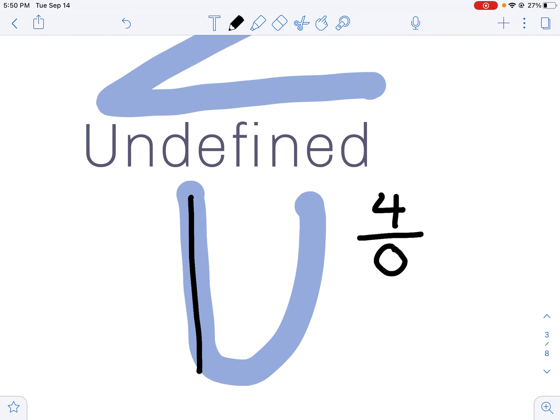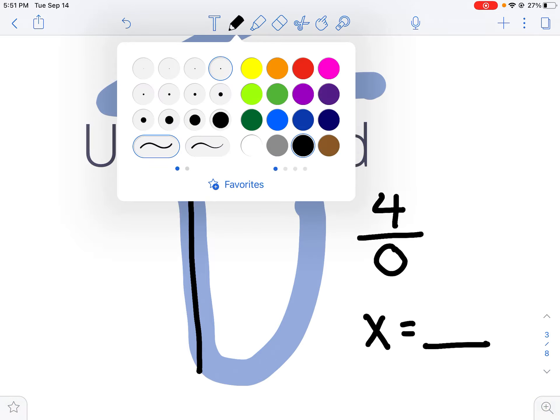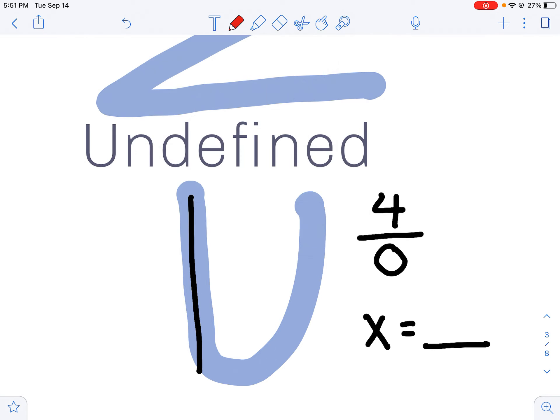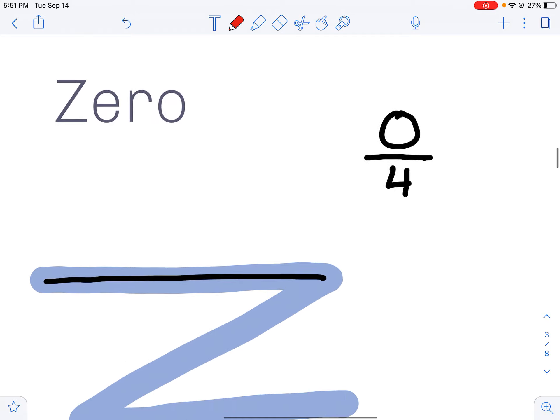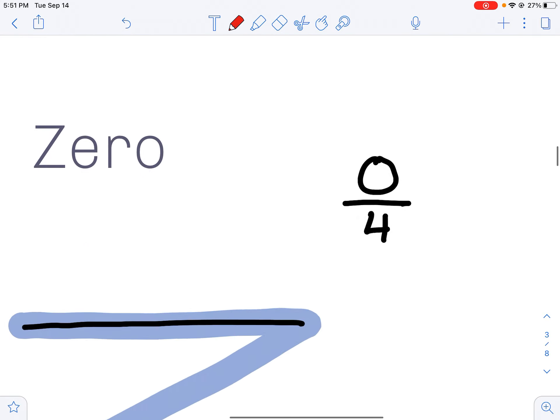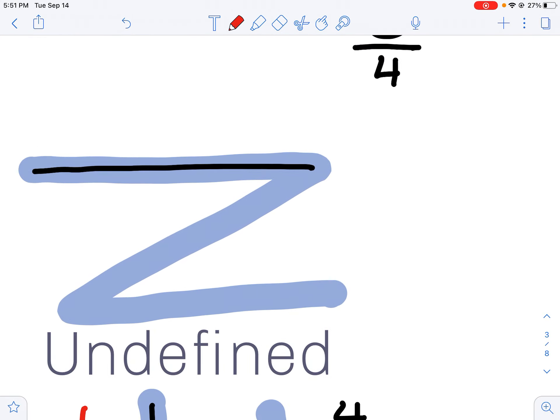If you ever have an equation that's undefined, it's going to be x equals and then wherever that line crosses the x-axis. If this point was like 8, let's say, it would be x equals 8. On your zero slope, it'll be just the opposite. It'll be wherever y crosses the x-axis, so if that's 2, your equation would be y equals 2.